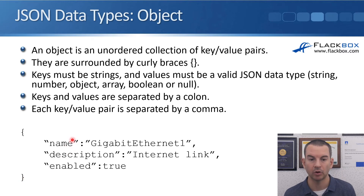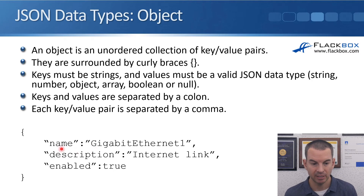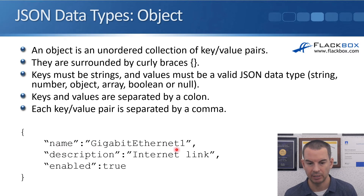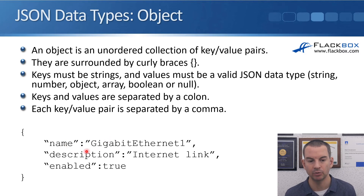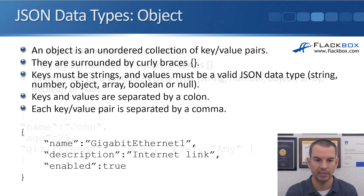Looking at the description for an interface, the key is 'name' and the value is 'GigabitEthernet1'. Then we've got the key 'description' with value 'internet link', and the key 'enabled' with the value 'true'. So we've got three key-value pairs: the key first, then the value, separated by a colon.